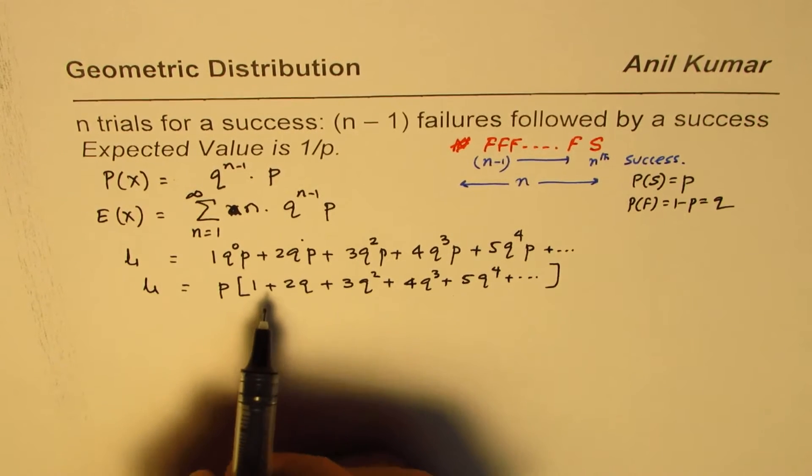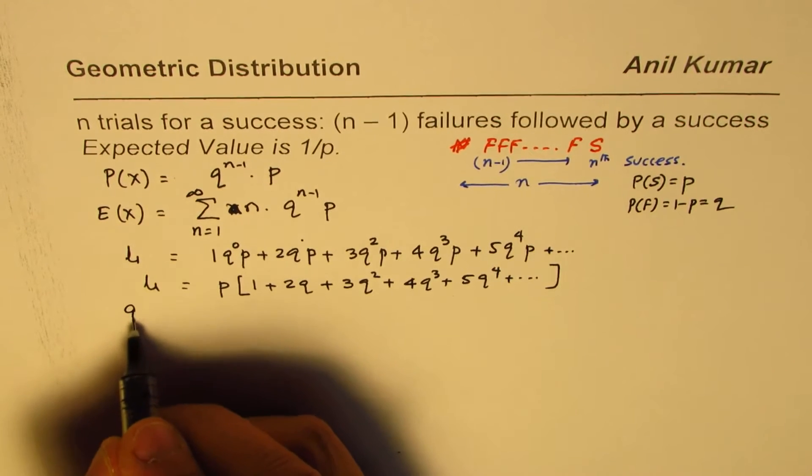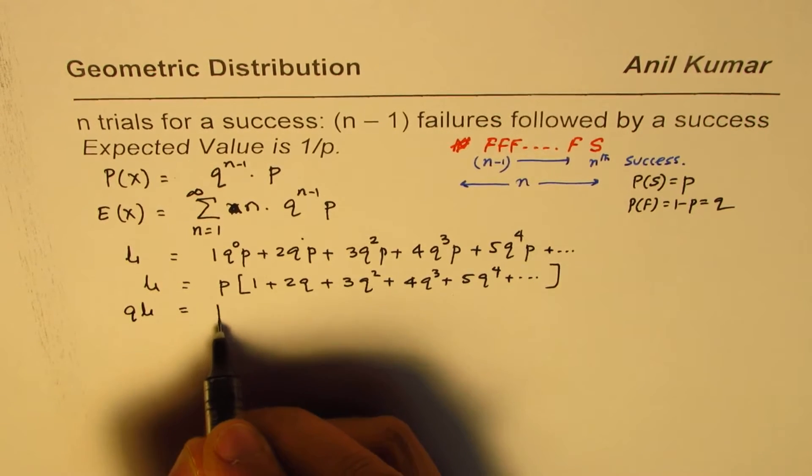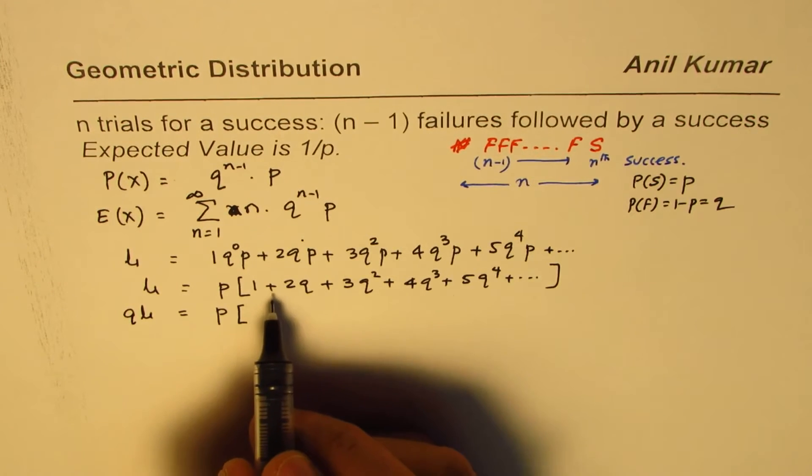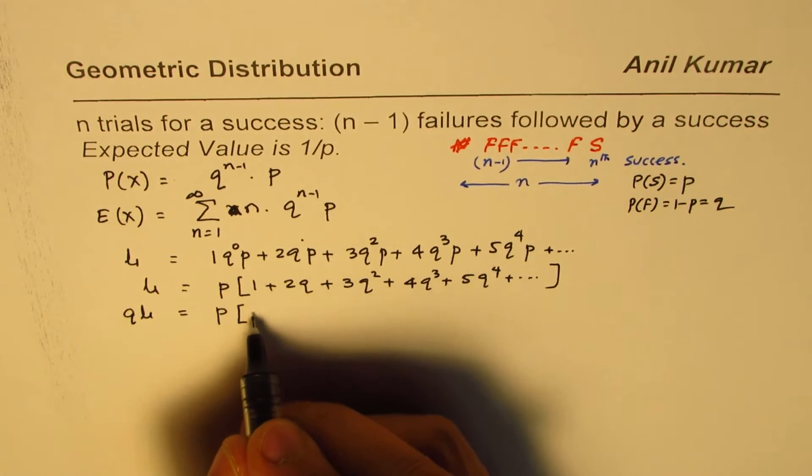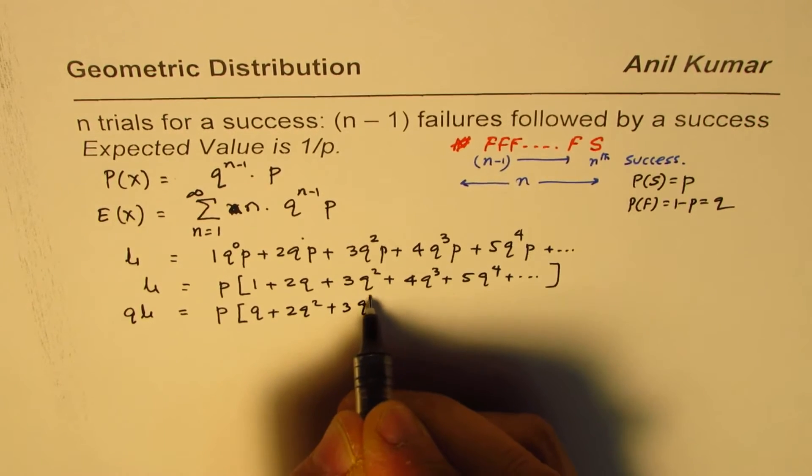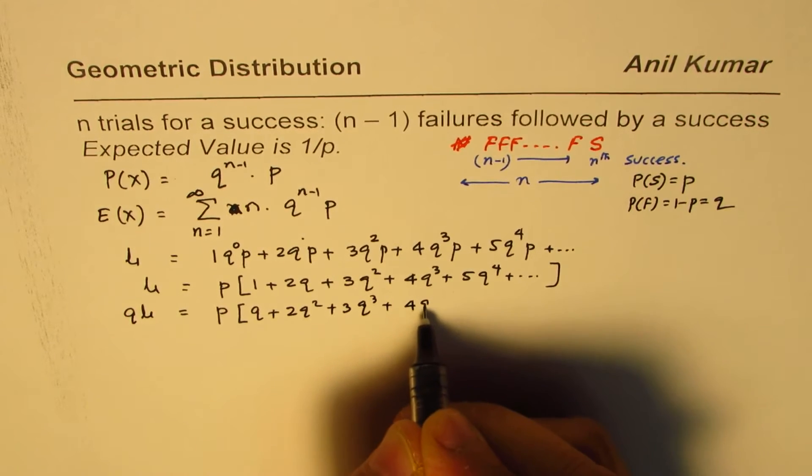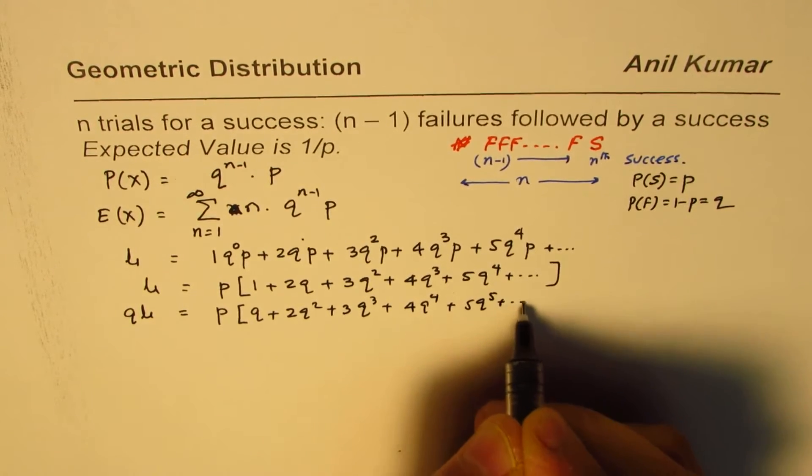Now if I multiply by Q on both sides, I get Qμ equals P times (Q plus 2Q square plus 3Q cube plus 4Q to the power of 4 plus 5Q to the power of 5, and so on).